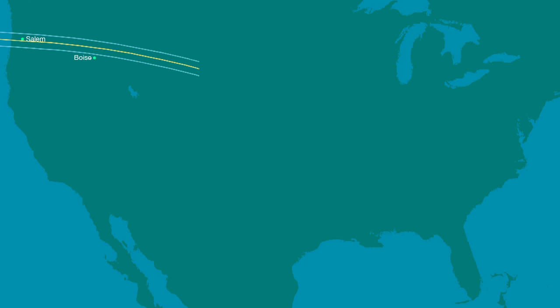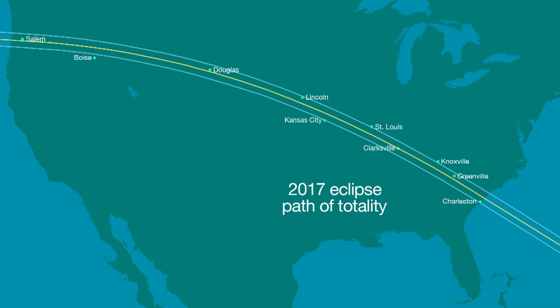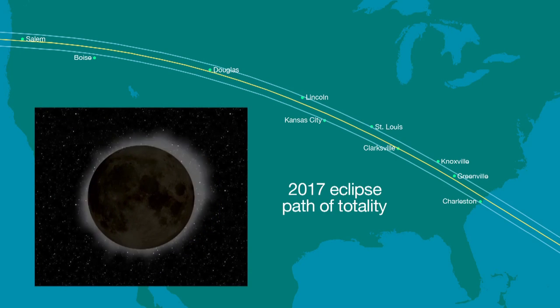A total solar eclipse, like the one this month and the one visible in parts of the U.S. in 2017, can only be seen from within a narrow track called the Path of Totality, where the moon completely blocks our view of the Sun's disk.